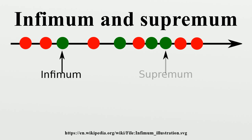The supremum of a subset S of a partially ordered set T is the least element in T that is greater than or equal to all elements of S, if such an element exists. Consequently, the supremum is also referred to as the least upper bound. The infimum is in a precise sense dual to the concept of a supremum. Infima and suprema of real numbers are common special cases that are important in analysis, and especially in Lebesgue integration. However, the general definitions remain valid in the more abstract setting of order theory where arbitrary partially ordered sets are considered.